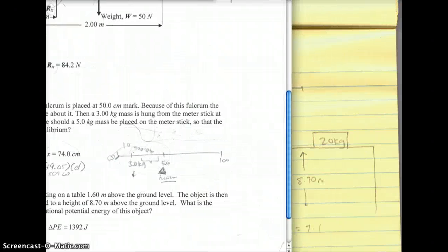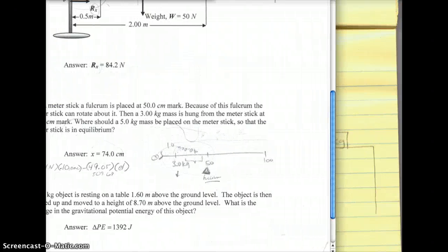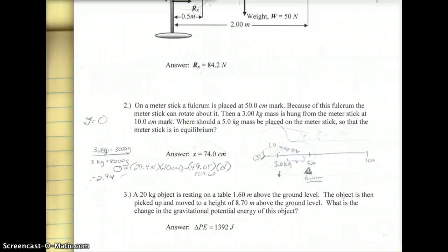Then the object is then picked up and moved to a height of 8.7 meters above the ground level. Which it doesn't say it's resting on a table, but it wouldn't matter. It could be resting on a table, it could be resting on a shelf. So I just drew myself a table. Either way, it's 8.7 meters above the ground level, so something is holding it up.